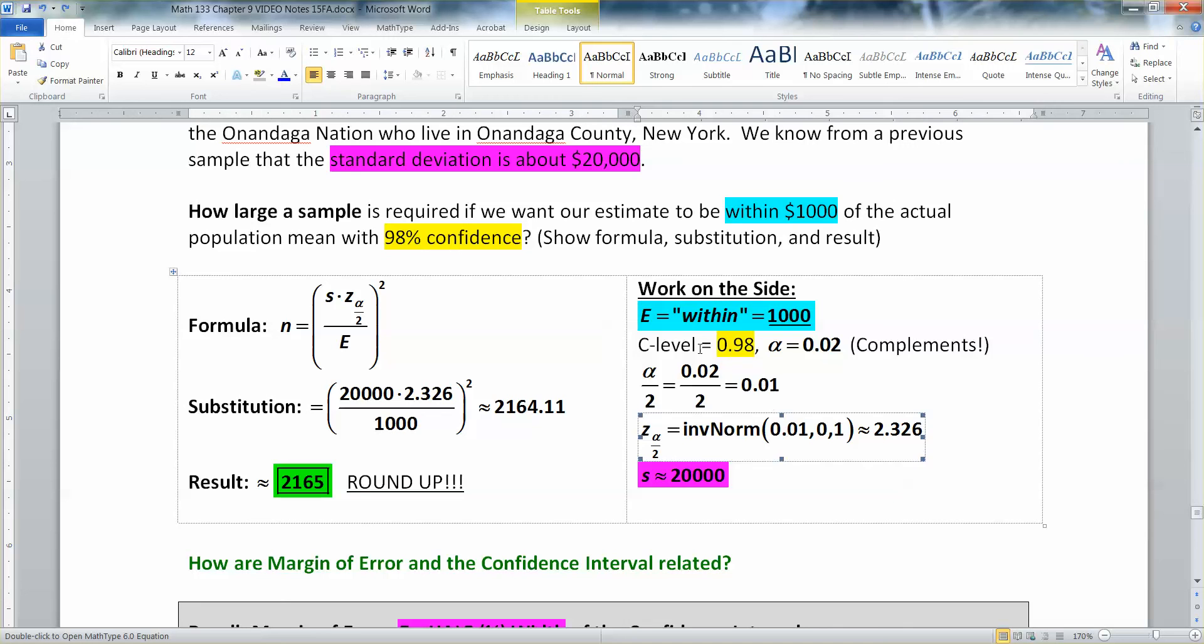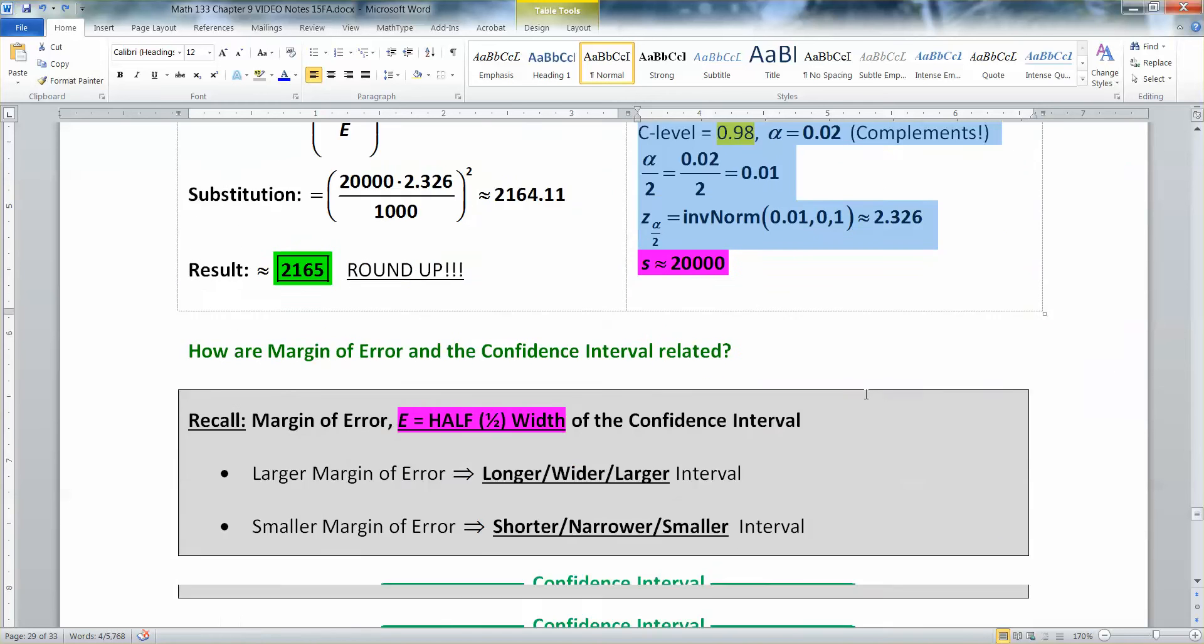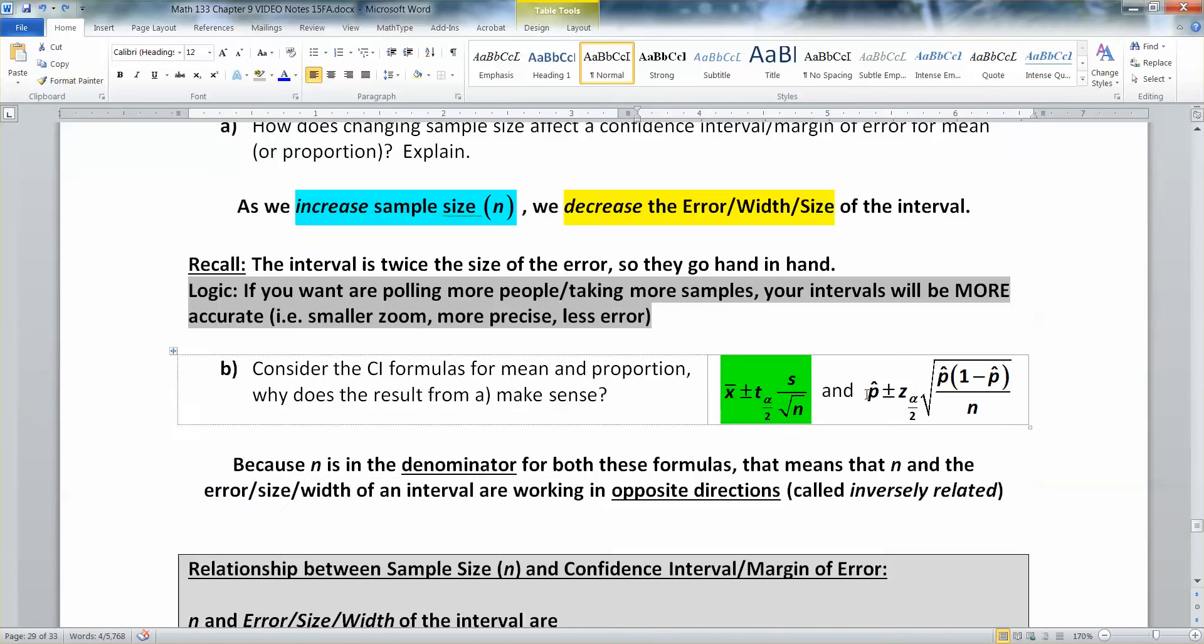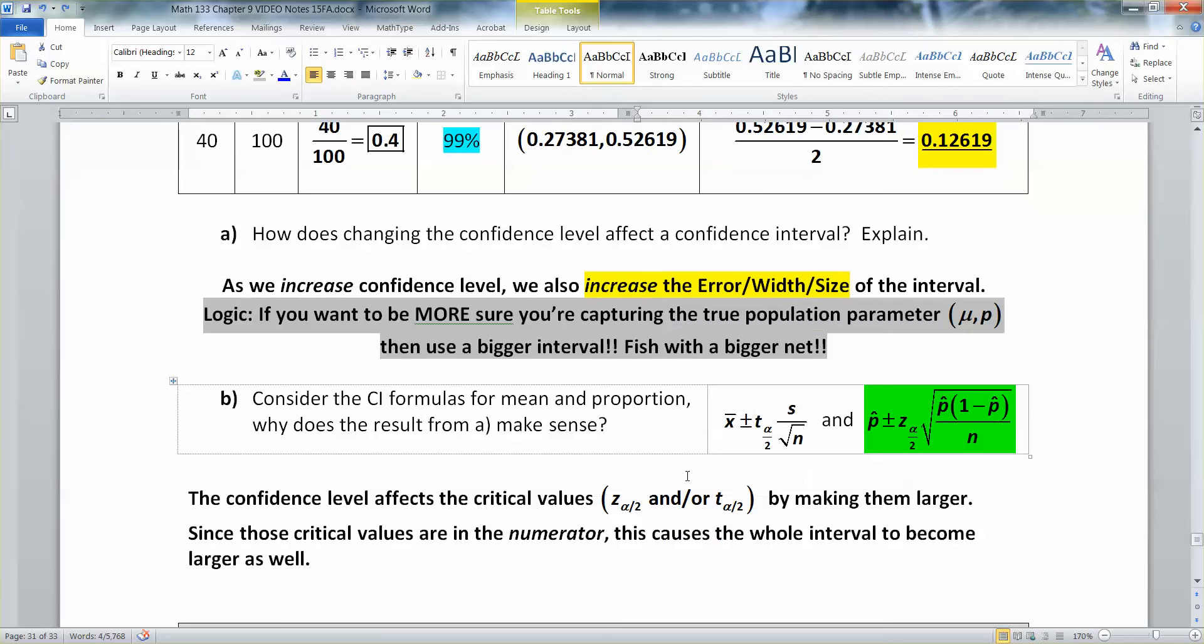Now, let me go back for a minute. You can see here that the confidence level was 98%, and then we had to go find the alpha, find the alpha over 2, find the z scores, right? All of these are tied together. When you change your confidence level, you're fundamentally affecting what your z score is. If you raise your confidence level, you're making your z score bigger, right? And that's what we're doing here.